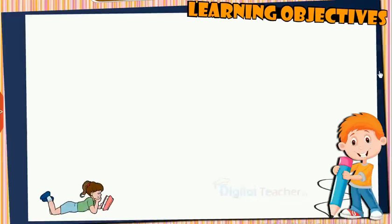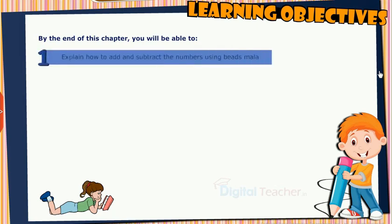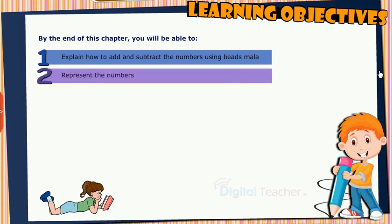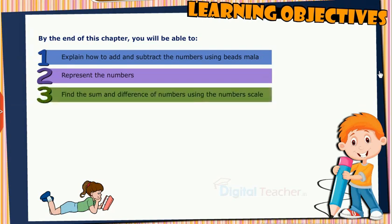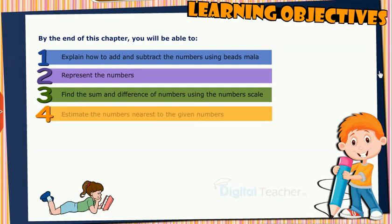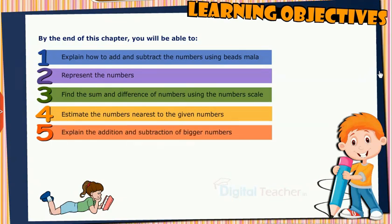Learning Objectives. By the end of this chapter, you will be able to: explain how to add and subtract numbers using beads Mala; represent the numbers; find the sum and difference of numbers using the number scale; estimate the numbers nearest to the given numbers; and explain the addition and subtraction of bigger numbers.